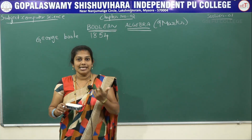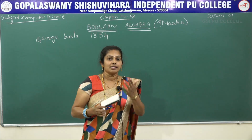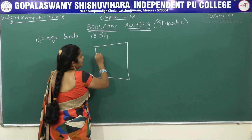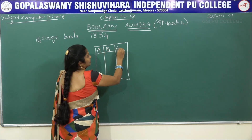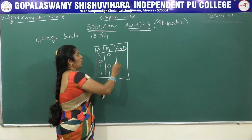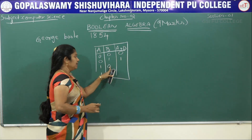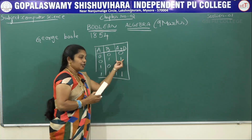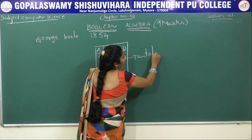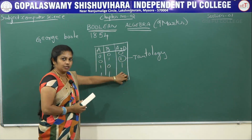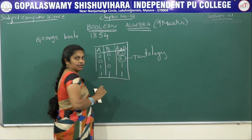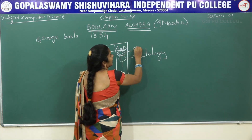One common question asked is: what do you mean by tautology and fallacy? Tautology means the result of an expression, if it is always true (or 1), then it is called tautology. For example, in a truth table with variables A and B, if the output is A plus B, then: 0+0=0, 0+1=1, 1+0=1, 1+1=1 — the result is always true. When the result of an expression is always false or 0, then it is called fallacy.